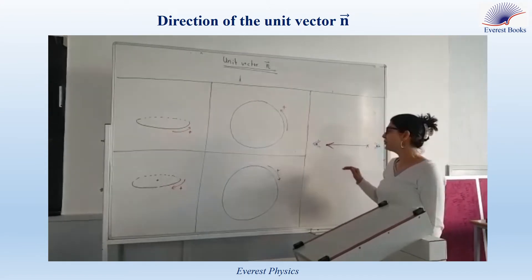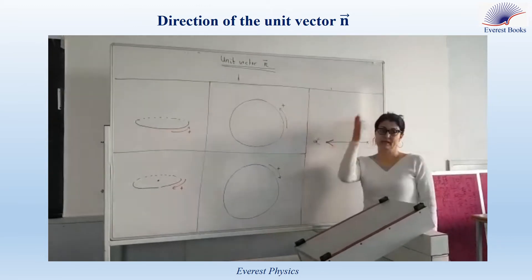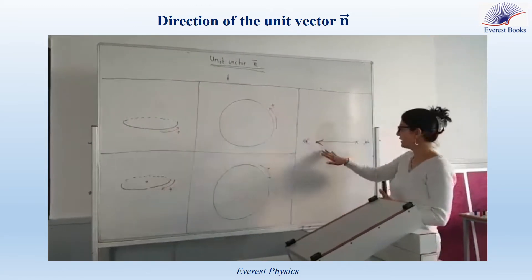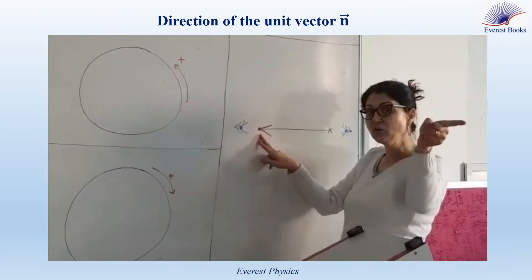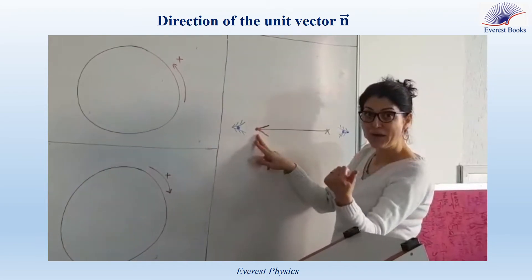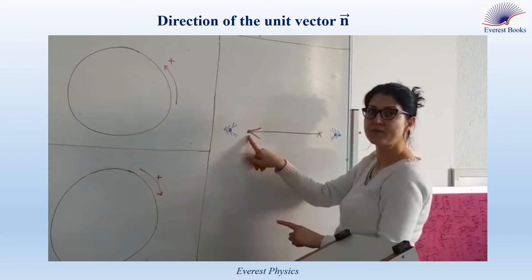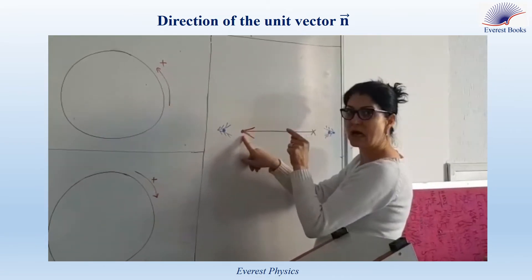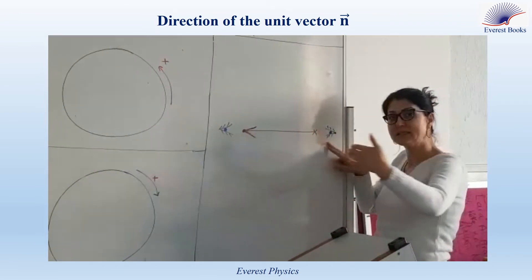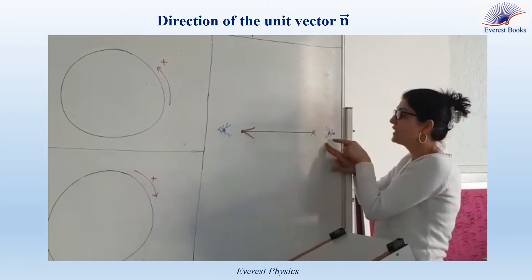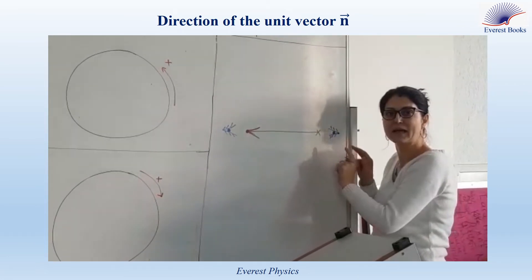First, I want to remind you how to draw a vector if it is directed outwards or inwards. If the vector is directed outwards away from the board, you are looking at the tip of the vector, so this vector is drawn as a dot. While if the vector is inwards, directed into the board, you will see the tail of the vector, so this vector is drawn as a cross.